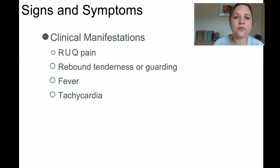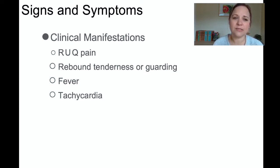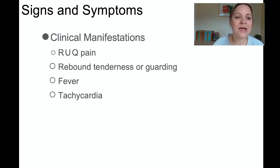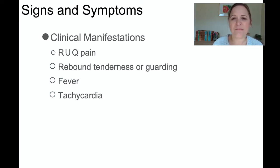Clinical manifestations include right upper quadrant pain. Because the vagus nerve can sometimes get irritated, patients can have pain radiating up to the right shoulder. Rebound tenderness — where it hurts more when you let go than when you press — or guarding, where the patient instinctively wants to hold their stomach because they know it's going to hurt. Patients can also present with fever and tachycardia. Additional signs and symptoms include abdominal distention, belching, and flatulence.